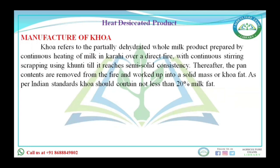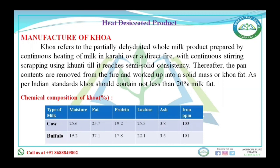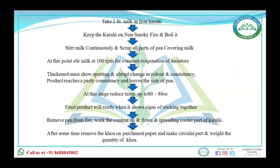Heat desiccated products: first is khoa. Khoa is a partially dehydrated whole milk product prepared by continuous heating of milk in a karahi over direct fire with continuous stirring using a khunti until it reaches a semi-solid stage. Khoa should not contain less than 20 percent milk fat. Cow milk khoa contains: 25.6% moisture, 25.7% fat, 19.2% protein, 25.5% lactose, 3.8% ash, and 103 mg iron. Buffalo milk khoa contains: 19.2% moisture, 37.1% fat, 17.8% protein, 22.1% lactose, 3.6% ash, and 10.1 mg iron.